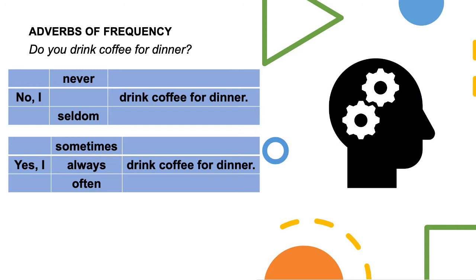Now let's use an example to see the different adverbs of frequency we can use. Do you drink coffee for dinner? To answer in a negative form, we can say: No, I never drink coffee for dinner. Or: No, I seldom drink coffee for dinner. Never means that you do it 0% of the time. Seldom means that you do it very rarely, maybe 10% of the time.